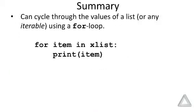We've seen that we could cycle through the values of a list or any iterable using a for loop. The syntax is we write the keyword for, then provide a loop variable, the keyword in, and then the iterable. Here we have for item in xList, where we're assuming xList is some list.